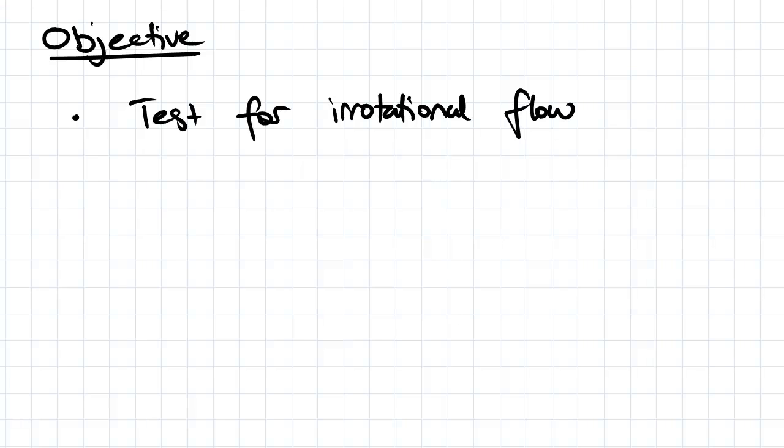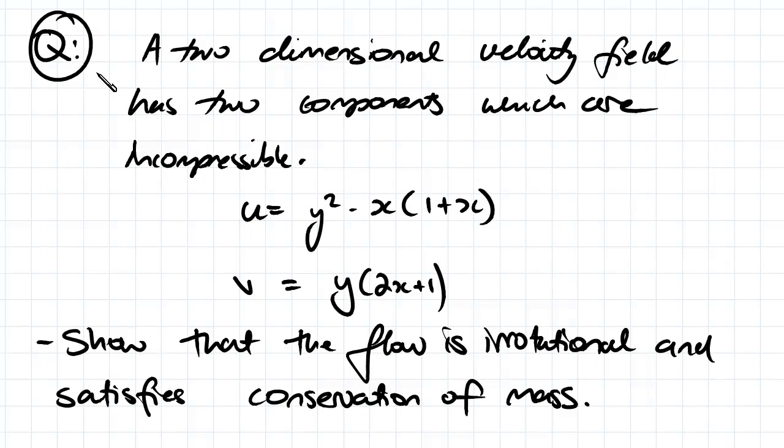Hey guys, the objective for this video is to test if your rotational flow. So we've got our question here: a two-dimensional velocity field has two components which are incompressible. We've got u equal to y squared minus x times 1 plus x, and v equal to y times 2x plus 1. So what we need to do...